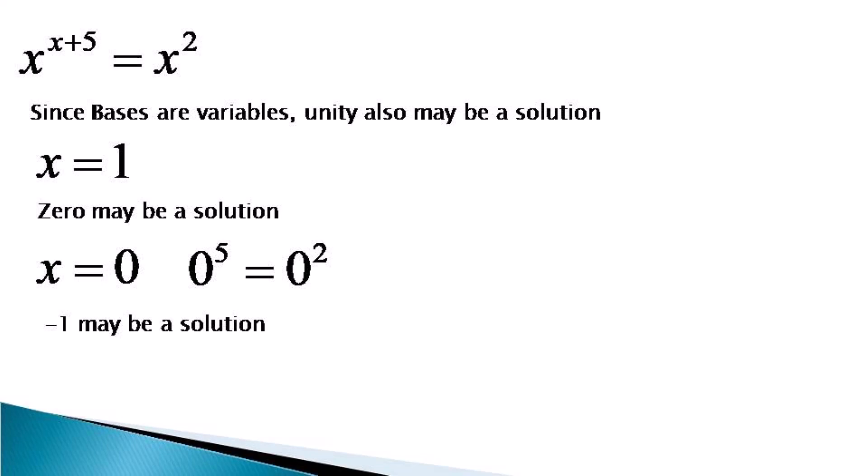Now the most tricky of the solutions: minus 1 may be a solution. Minus 1 may be a solution only when the indices on both sides become even. So let us check minus 1.